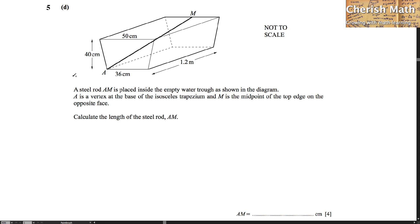Part D. A steel rod, AM, is placed inside the empty water trough as shown in the diagram. A is a vertex at the base of the isosceles trapezium and M is the midpoint of the top edge on the opposite face. Calculate the length of the steel rod, AM.